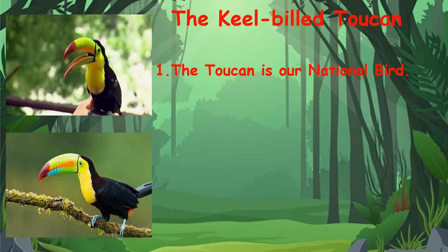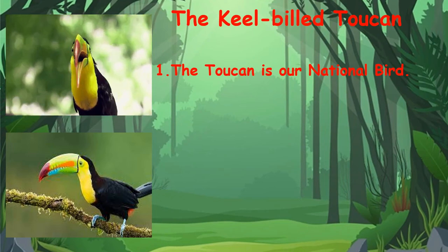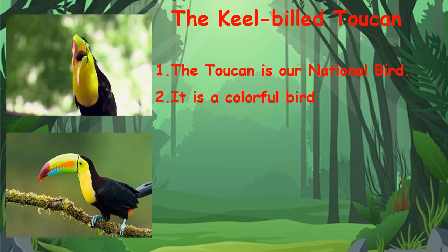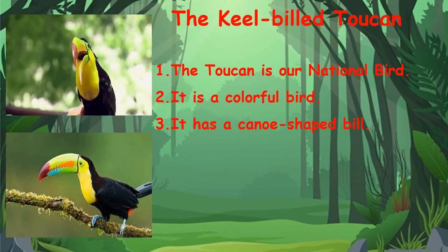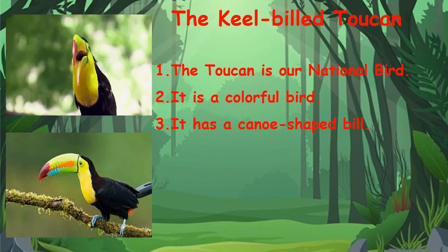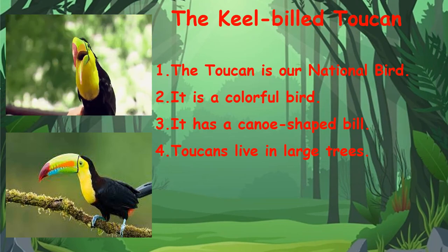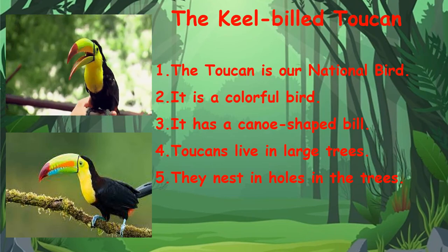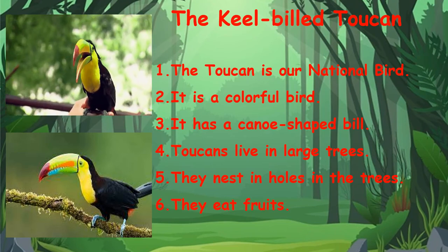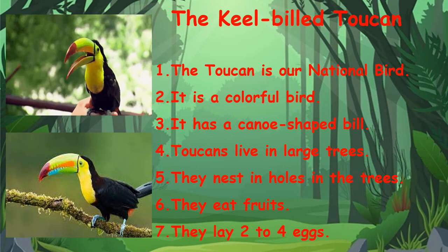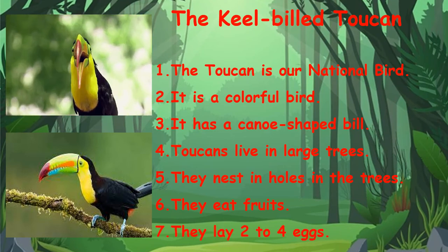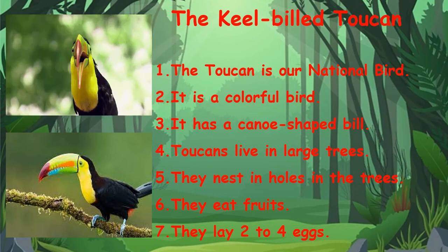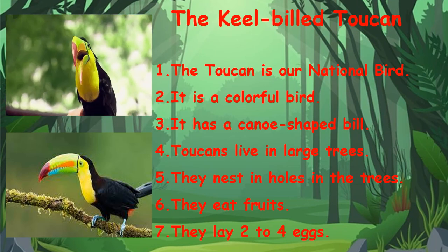So the toucan, the keel-billed toucan, is our national bird. It is a colorful bird. It has a canoe-shaped bill. Toucans live in large trees. They nest in holes in the trees. They eat fruit and they lay two to four eggs. So remember boys and girls, the keel-billed toucan is our national bird.